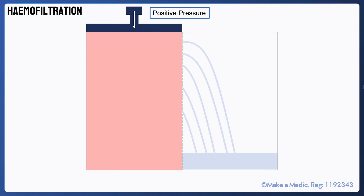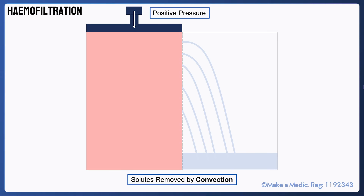Haemofiltration, on the other hand, works primarily by convection. The blood is taken out of the body via a large-bore central venous line and passed through a pump, which creates positive pressure in the blood compartment. This means that fluid gets pushed through the semipermeable membrane and various solutes are dragged along with it. The key difference between haemodialysis and haemofiltration is that in haemofiltration the solutes are removed by convection, whereas in dialysis they are removed by diffusion.